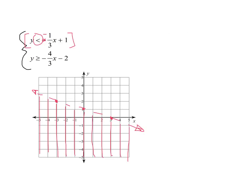Now let's look at the second inequality in blue. This one is also in slope-intercept form. My y-intercept is negative 2, so that's where I'll put my first dot. My slope is negative four-thirds, so I move the negative to the numerator. Going down 4 from negative 2 would go off the graph, so instead I go up 4 and to the left 3 for my second point. Those are the only two points that will fit on my graph.